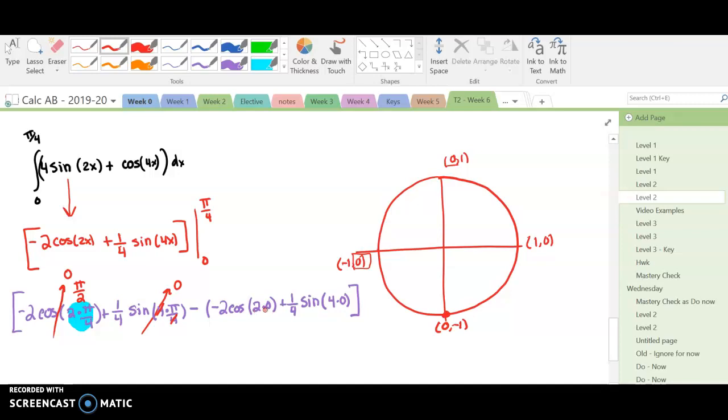Here, 2 times 0 is 0, cosine of 0 is 1, so we're going to have negative of negative 2 times 1. Plus 4 times 0 is 0, sine of 0 is 0. So the only thing that's not 0 is this negative of negative 2, or positive 2.